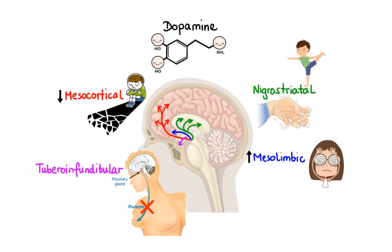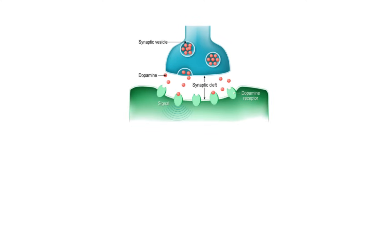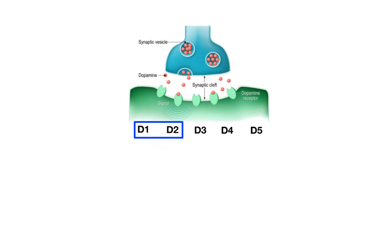Within those different pathways, dopamine interacts with specific receptors that mediate its functional effects. There are five primary types of dopamine receptors known as D1, D2, D3, D4, and D5. Out of the five, D1 and D2 receptors are found in the highest density in nearly all of the pathways involved in psychotic disorders. However, D2 receptors are the most clinically relevant because they are the main targets of antipsychotic drugs.